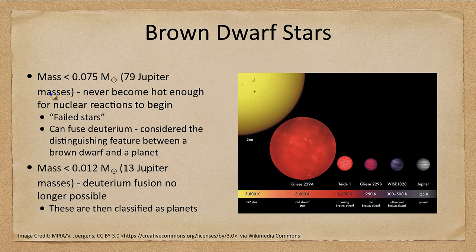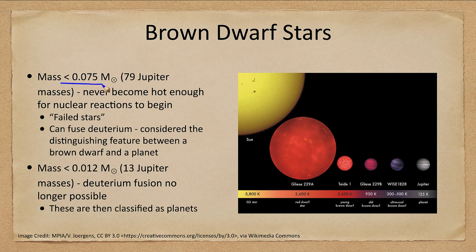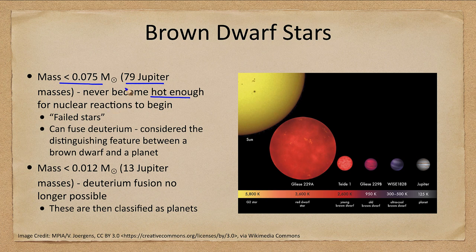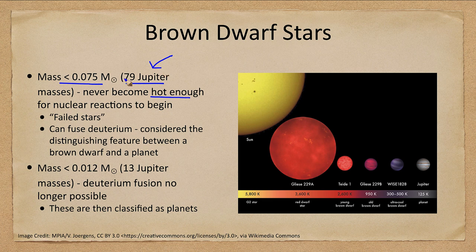Here we see the mass of a brown dwarf star about 0.075 solar masses, 79 Jupiters. These are objects that never could become hot enough for nuclear reactions to begin. So Jupiter is not really a failed star. You would need 78 more Jupiters worth of mass to be able to make Jupiter into a star.